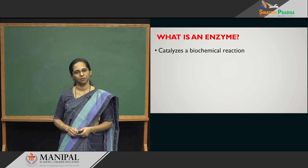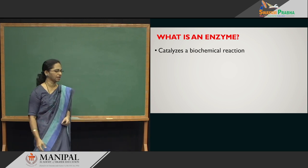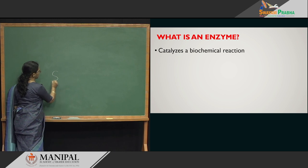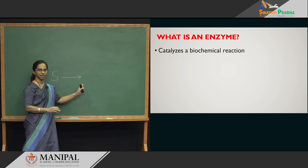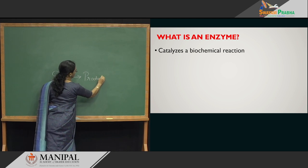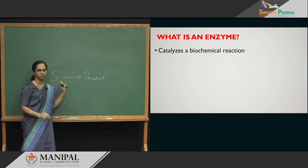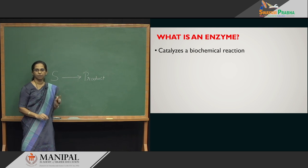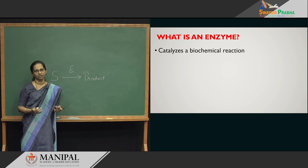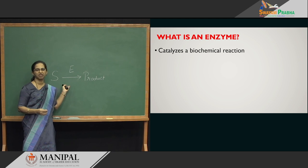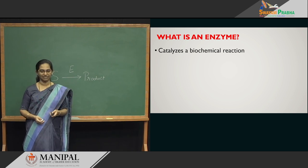An enzyme is a substance or a catalyst that will enhance a chemical reaction. A chemical process that converts a substrate to a product is called a biochemical reaction. This can take place on its own — substrate to product — spontaneously. But if you have an enzyme, you speed up the reaction. Say you need half an hour to do this; with the enzyme, you can do it within 2 minutes. So, an enzyme is catalyzing the reaction.